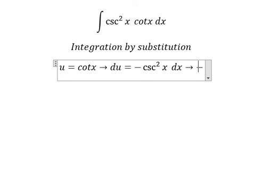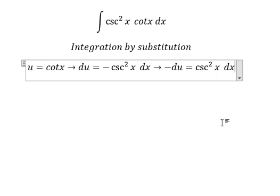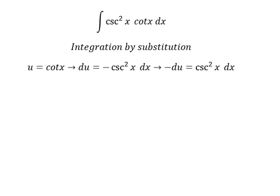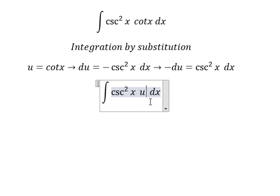Now we change cotangent x into u, and cosecant squared x dx we change to negative du.